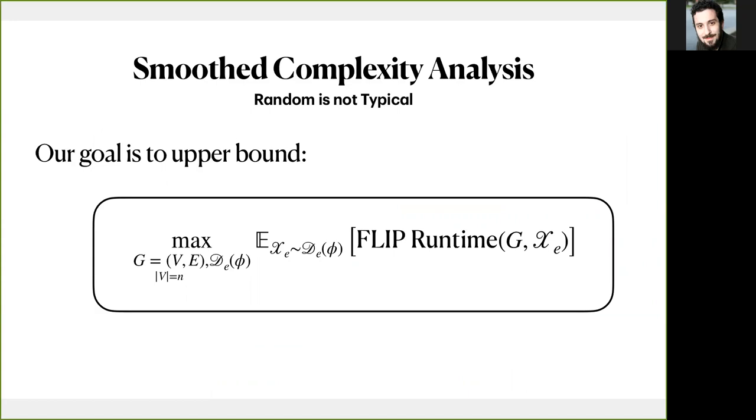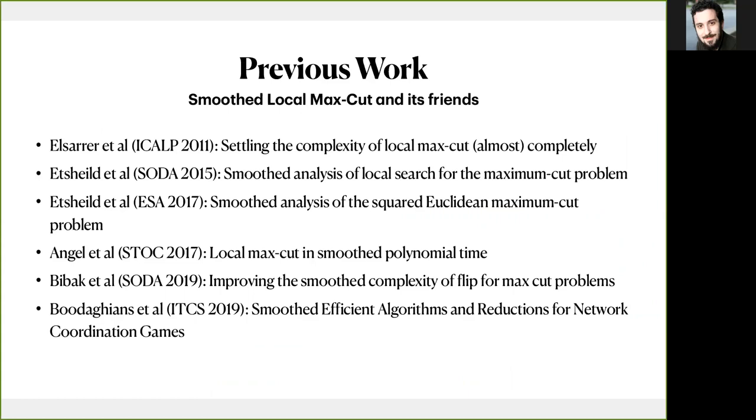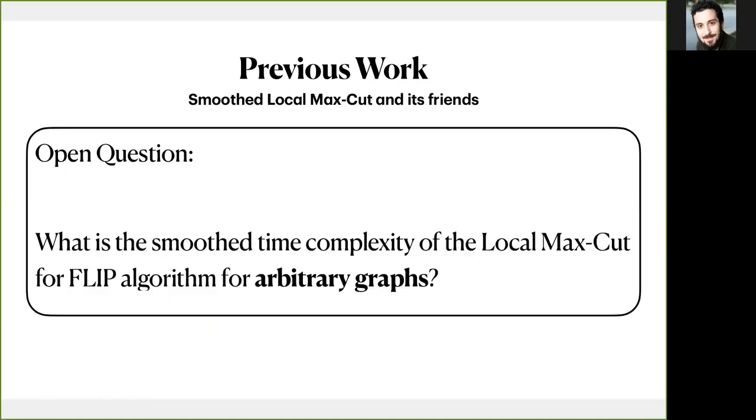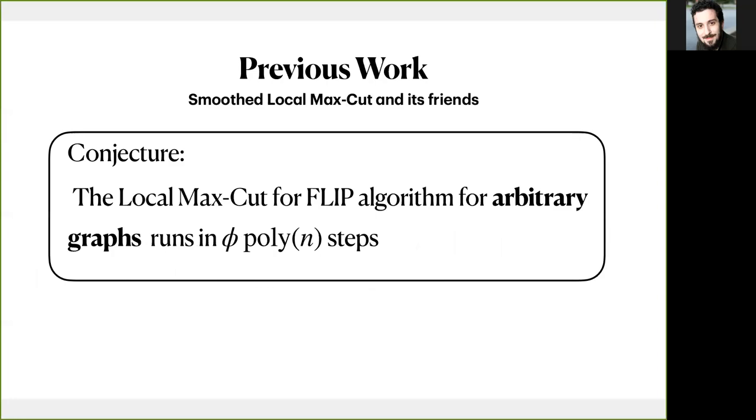The complexity question now in this world is to bound the maximum expected number of steps of the flip algorithm in terms of the size of the graph and the parameter phi under this perturbation model. It is worthy to mention that the last 10 years there was extensive research on the smooth complexity of local max cut. We summarize the previous work with the following two points. We know that the flip algorithm runs in smooth polynomial time for special kinds of graphs, like complete graphs or graphs with bounded degree. On the other hand, the best previous result for the general case was the quasi-polynomial n to log n of Etscheid and Röglin. This is actually the major open question. What is the smooth time complexity of local max cut for flip algorithm for arbitrary graphs? Can we close the gap and prove the conjecture that the smooth complexity is totally polynomial?